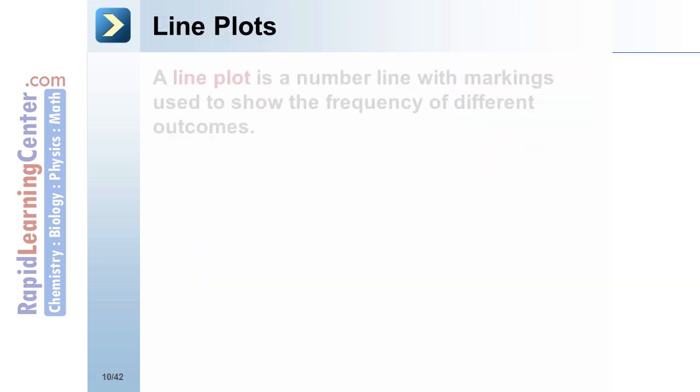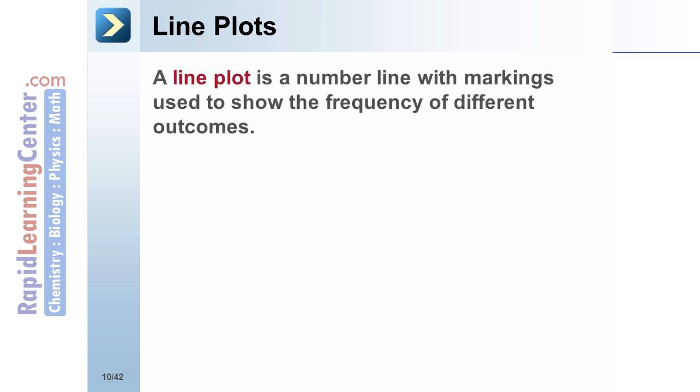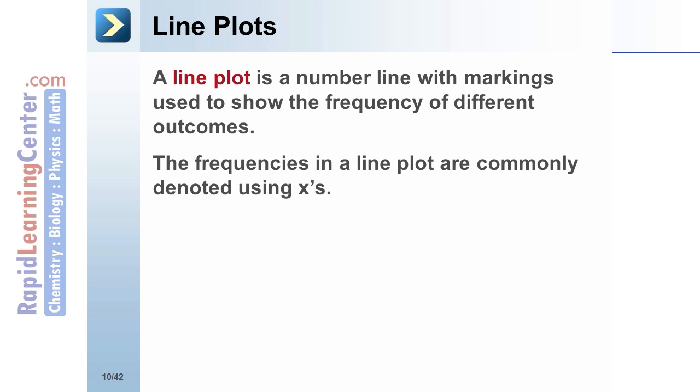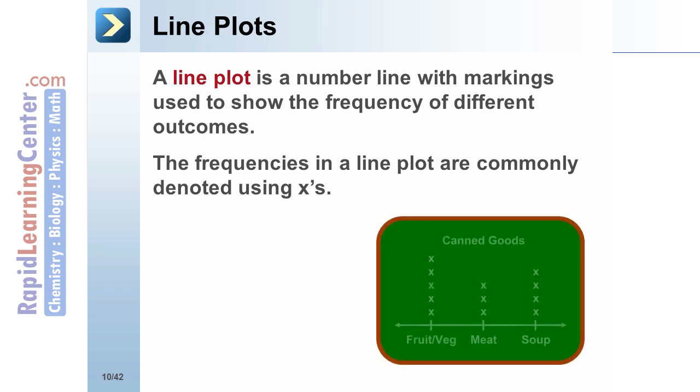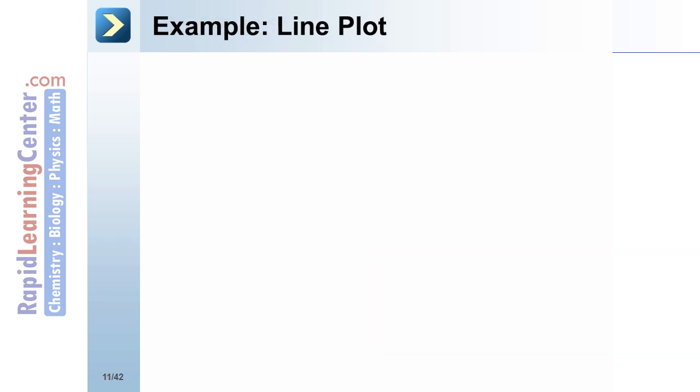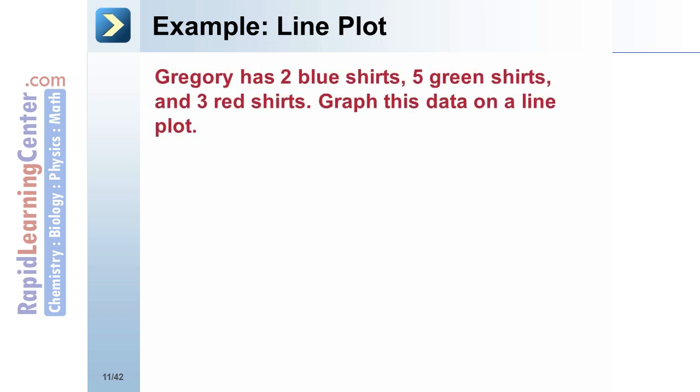Line plots: a line plot is a number line with markings used to show the frequency of different outcomes. The frequencies in a line plot are commonly denoted using x's. For example, a line plot with x's can be used to organize and count the different types of canned goods collected by a class.